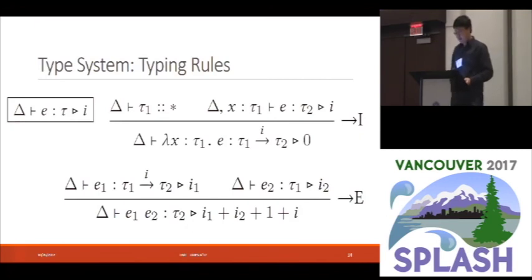For the type system, I will only discuss the introduction and the elimination typing rule for function type. So first, let's look at the typing judgment. So a typing judgment has an index part, which is an upper bound of the time we need to evaluate the expression e to a value. Now, to show that a lambda abstraction has a function type with a time bound i, we just need to show that the function body can be evaluated within time i. And the total time to evaluate a function application e1, e2 is the sum of the time to evaluate e1 and e2 plus the time to evaluate the function body plus one for a beta reduction.